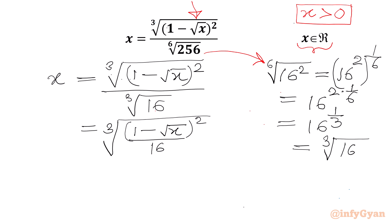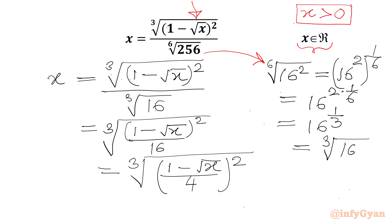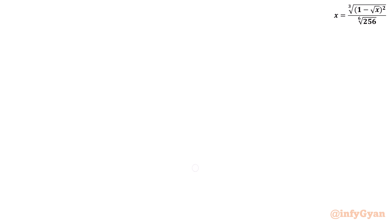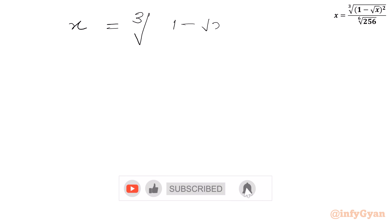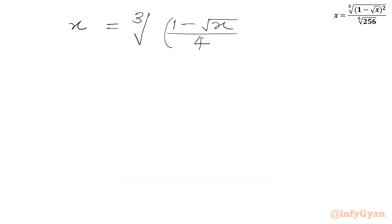Now, 16 is the square of 4, so we can write this as the cube root of (1 minus square root x over 4) whole squared, equal to x. So the equation becomes x equal to cube root of (1 minus square root x over 4) whole squared.